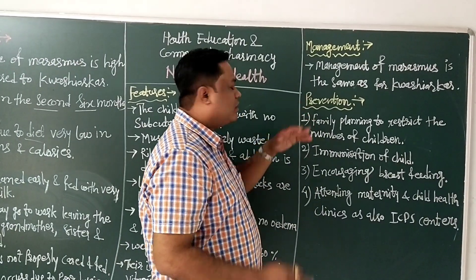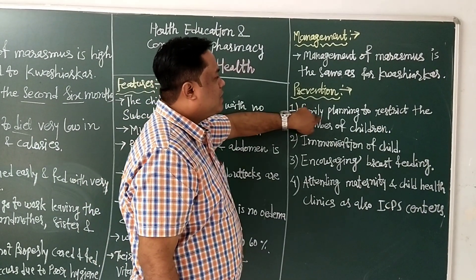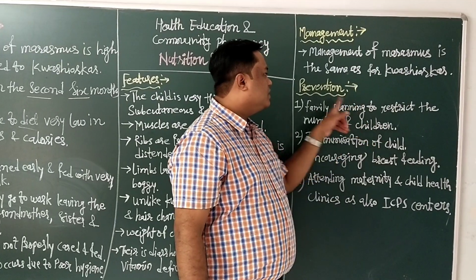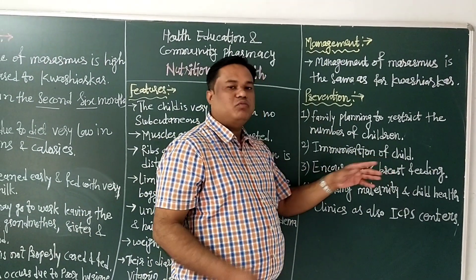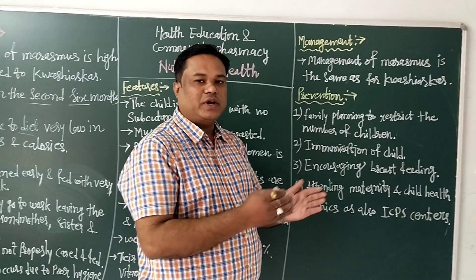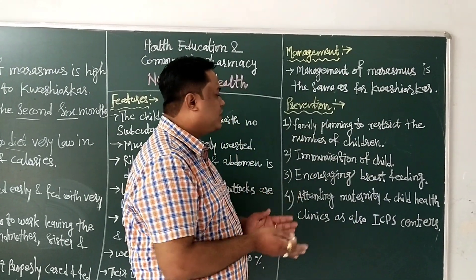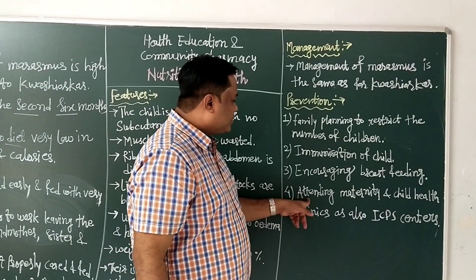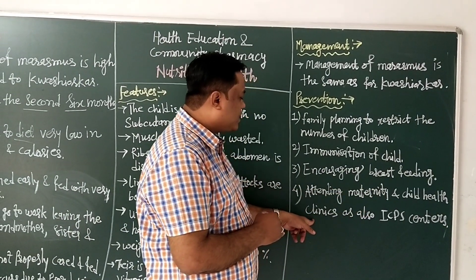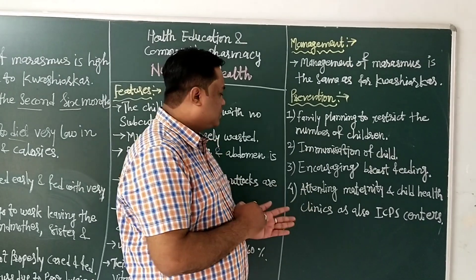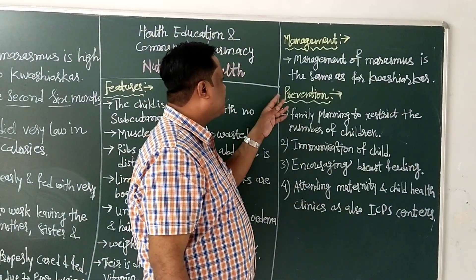The prevention of marasmus includes: first, family planning to restrict the number of children; second, proper immunization of the child to protect from certain disease conditions; third, encouraging breastfeeding — the mother should give breastfeeding to the child for several years. Fourth, attending maternity clinics for proper mother and child care, and also attending ICDS centers. These are the preventive measures.